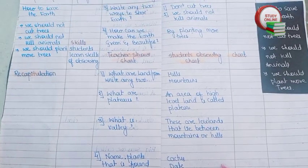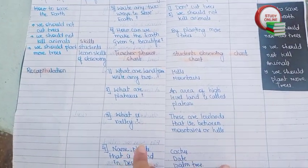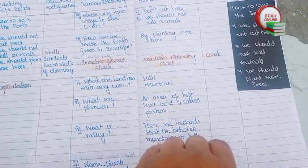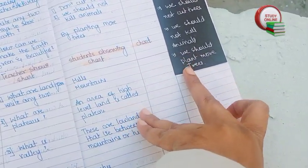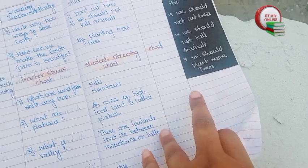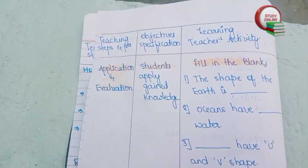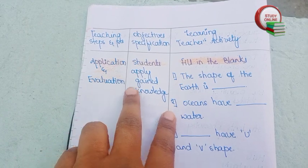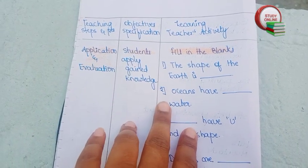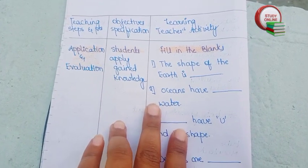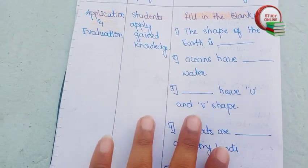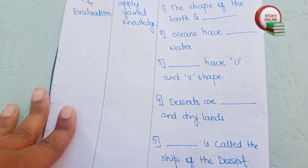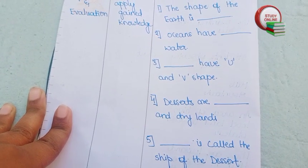This is the overall look of our lesson plan. Now let's turn to the last page — Application and Evaluation. For this section, we give four or five fill-in-the-blank questions. I have added five questions here. So this was my complete lesson plan.